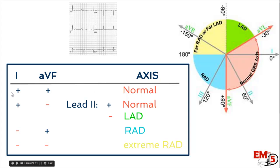If we have a positive wave in lead 1 and a positive in AVF, that means we have a normal axis. If we have negative in lead 1 and negative in AVF, that's extreme right axis deviation — very abnormal. If you have a positive in lead 1 and a negative in AVF, you're in the upper right quadrant, which can be either left axis deviation or normal. In this case, look at a third lead — lead 2. Positive in lead 2 is normal; negative in lead 2 is left axis deviation.